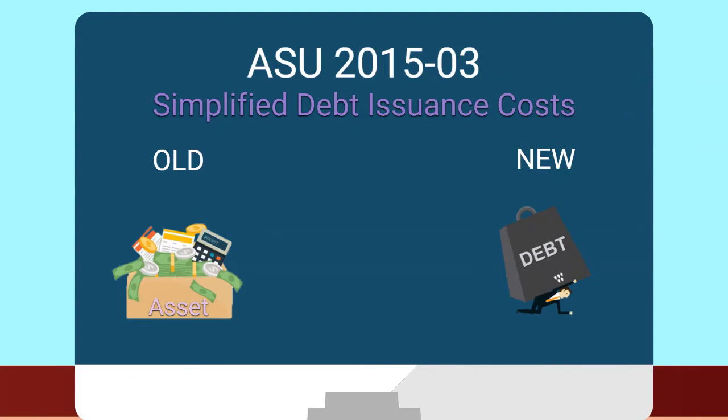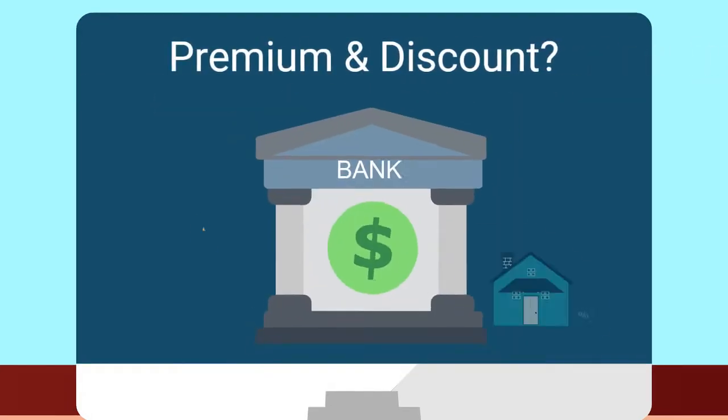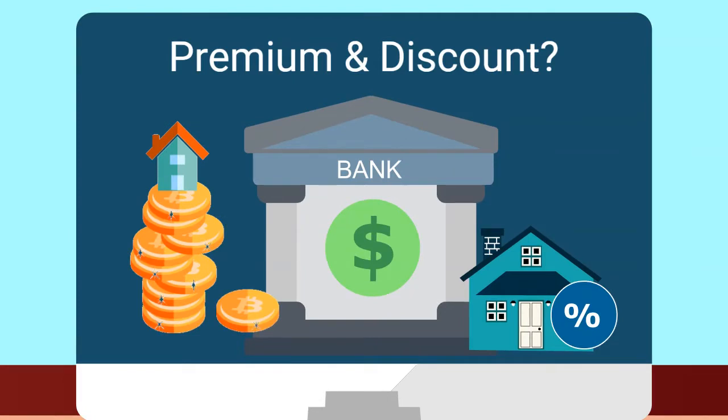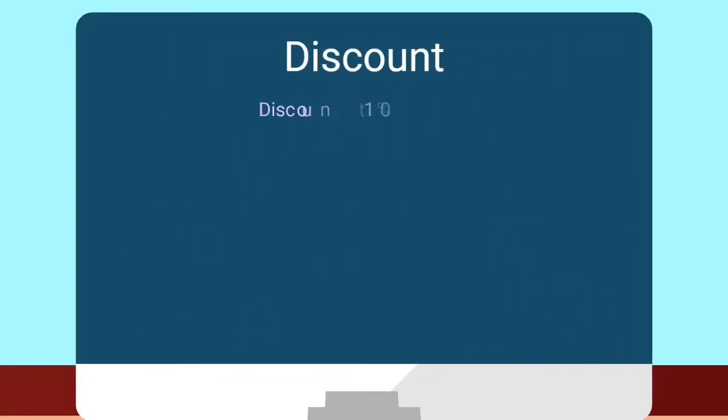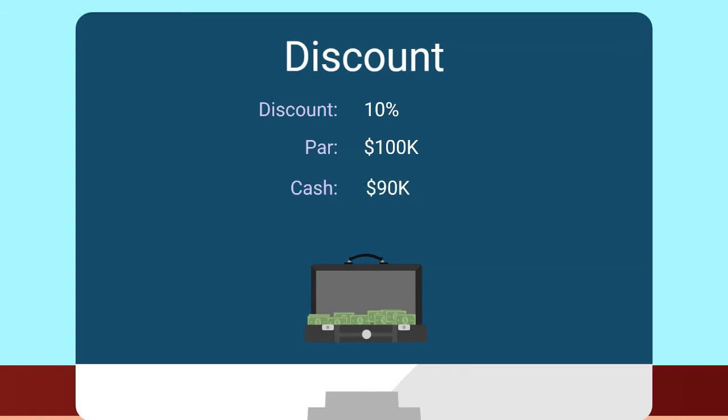This is consistent with how we account for debt discounts and premiums. You mentioned premiums and discounts. What exactly are those in relation to debt? Sometimes debt is issued at a premium or a discount based on how the deal may be structured. So for example, if there's a 10% discount on par value of $100,000 of debt, that would be a $10,000 discount, meaning you would receive $90,000 of cash.